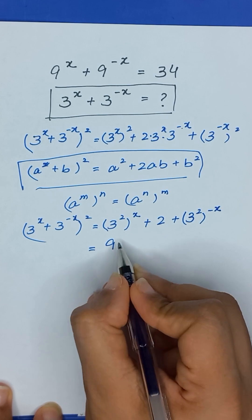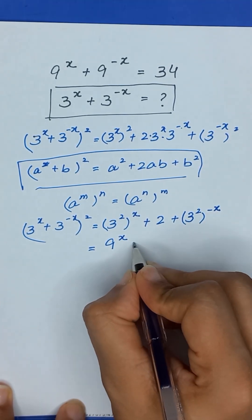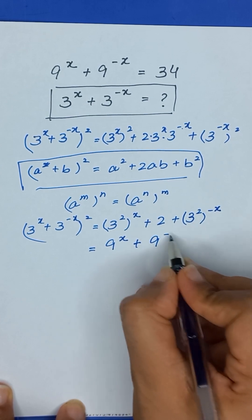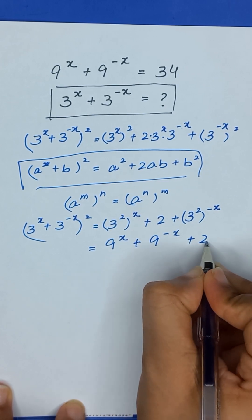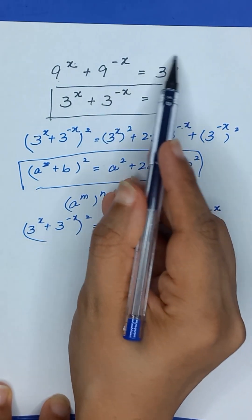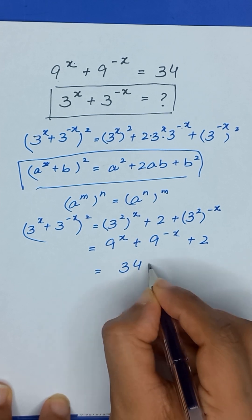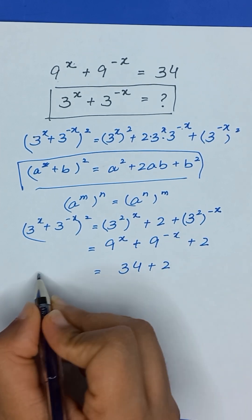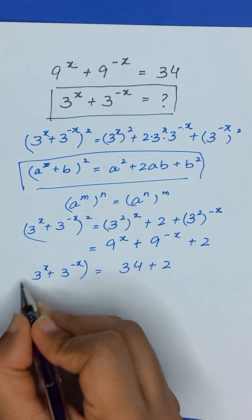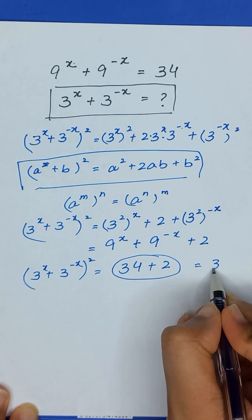3 squared is 9, so it becomes 9 to the power x plus 9 to the power minus x, which equals 34. So we substitute 34 plus 2 here, giving us 3 to the power x plus 3 to the power minus x, squared, equal to 34 plus 2, which equals 36.